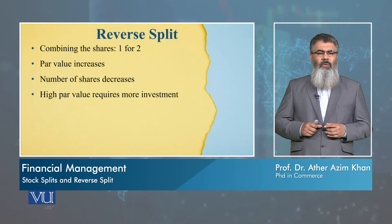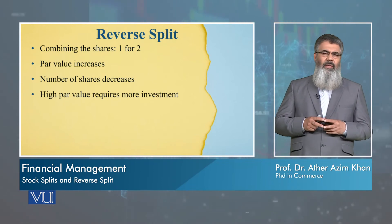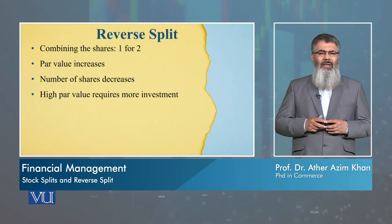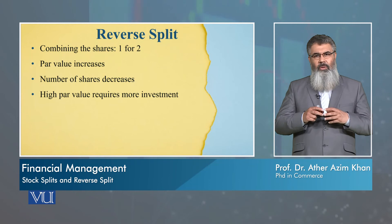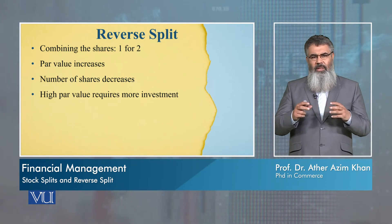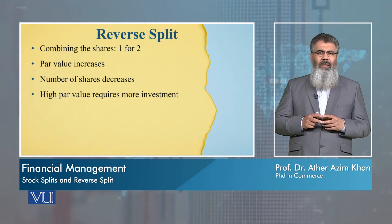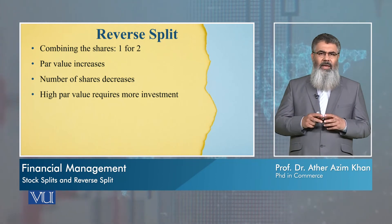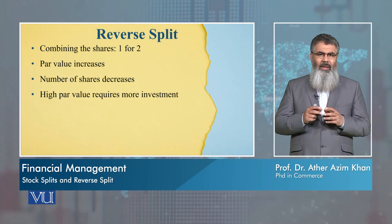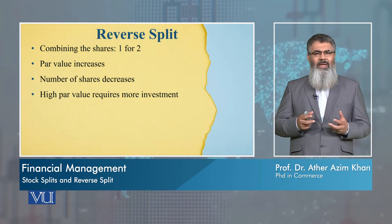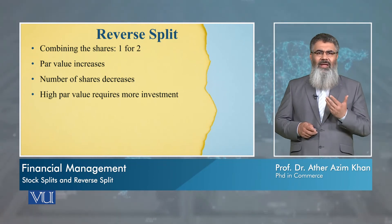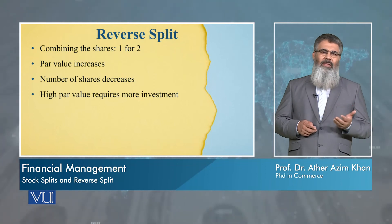High par value requires more investment. As mentioned, a reverse split of a stock is done so that the investment we have can be made possible for more people. But if the opposite happens — that the share's value is so low that it is not attractive to people — then through a reverse split, by combining shares and increasing their value, we can make it more attractive.